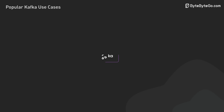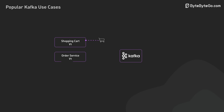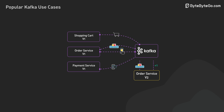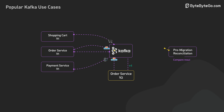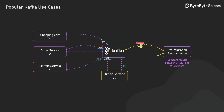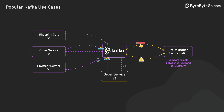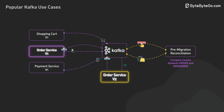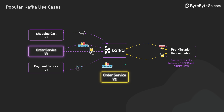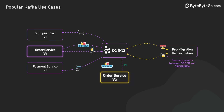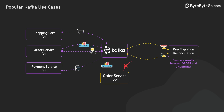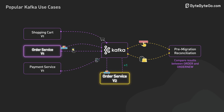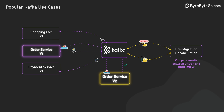Kafka can replay messages from any point in its retention period, which is key for data reconciliation and helps maintain consistency during the migration process. In a large-scale migration, Kafka can act as a safety net. We can run old and new systems in parallel — both consuming from and producing to Kafka — allowing for easy rollback if issues arise, and enabling detailed comparisons between old and new system outputs.